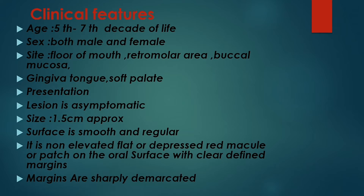Looking at clinical features: erythroplasia usually occurs at the fifth to seventh decade of life, that is 50 to 70 years of age, and it occurs in both males and females. The site — it mostly occurs in the floor of the mouth, retromolar areas (which are behind the third molar), and the buccal mucosa.